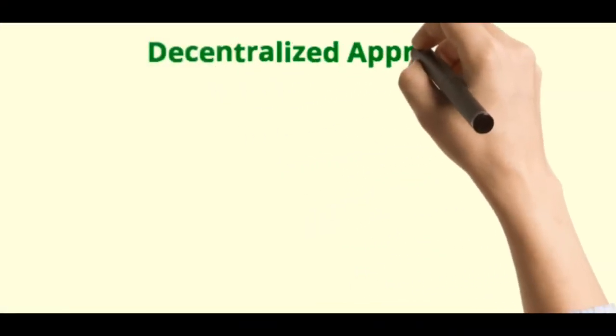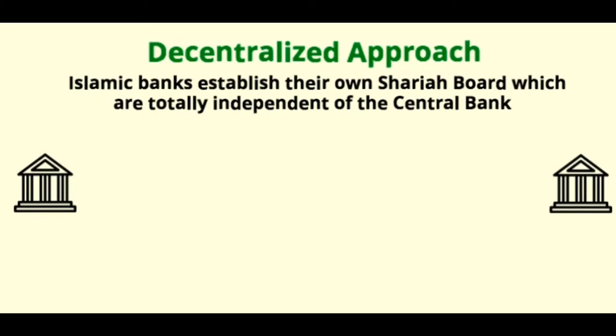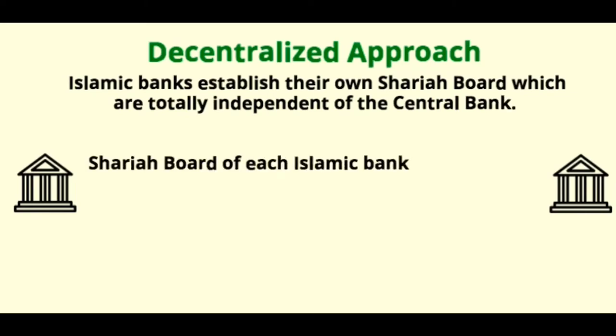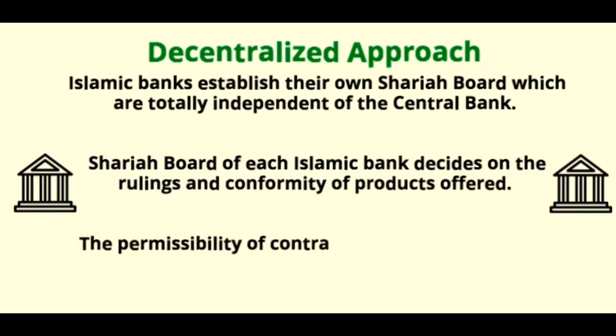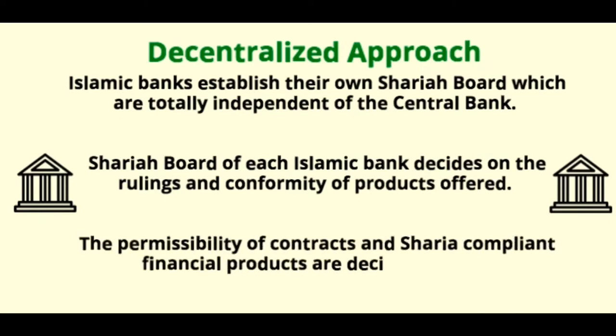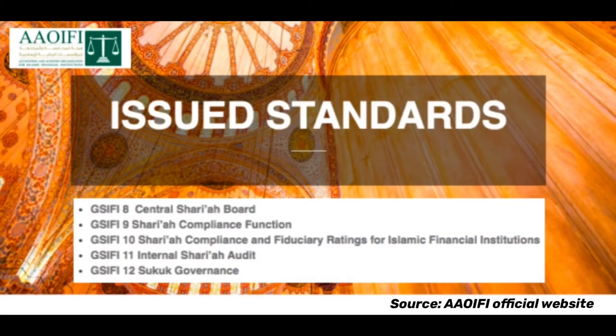Next, let's take a look at the decentralized model of Sharia governance framework for Islamic banks in Bahrain. In a decentralized model, the Islamic banks have their own Sharia board which are totally independent of the central bank. This means that the Sharia board of each Islamic bank decides on the rulings and conformity of the products offered. The permissibility of contracts and Sharia-compliant financial products are decided by their own Sharia committee. Islamic banks in Bahrain have their own Sharia supervisory committee to ensure all the business and operations are in compliance with Sharia, in line with AAOIFI's governance standards.